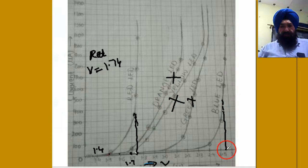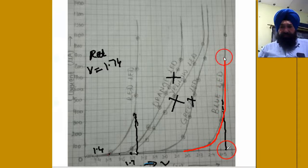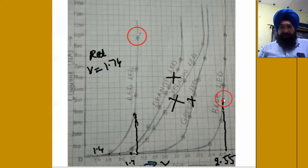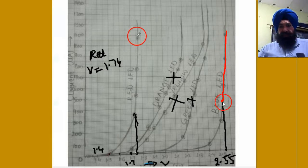Similarly, if you perform the experiment for the blue color, then this will be the graph. Again notice that voltage, this voltage from where the graph is almost a vertical straight line, very small variation. This voltage is 2.55, very important.